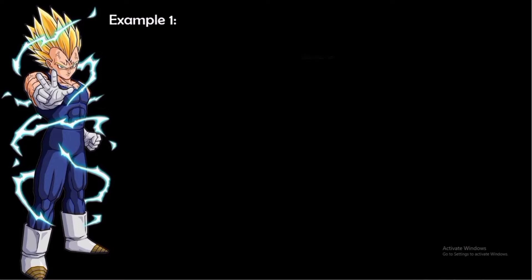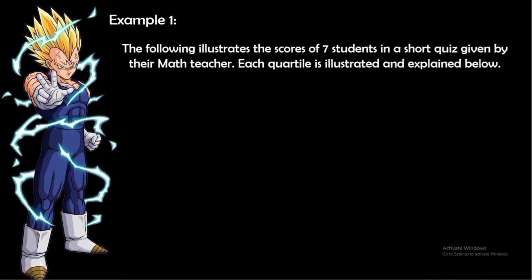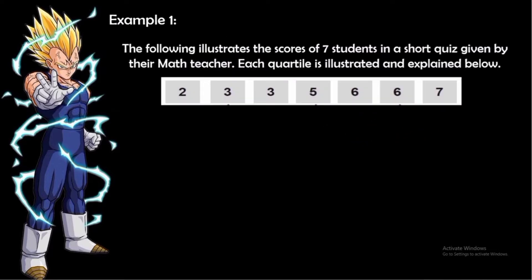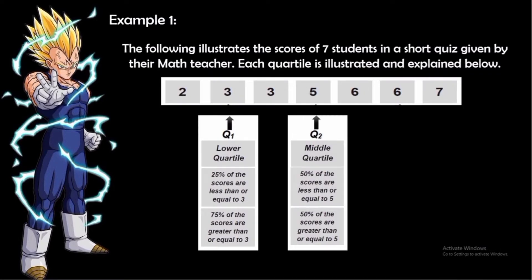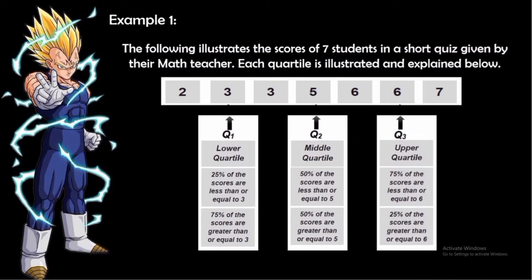Example 1: The following illustrates the scores of seven students in a short quiz: 2, 3, 3, 5, 6, 6, and 7. The first quartile is 3 — 25% of scores are less than or equal to 3, or 75% are greater than or equal to 3. The second quartile is 5 — 50% of scores are less than or equal to 5. The third quartile is 6 — 75% of scores are less than or equal to 6, or 25% are greater than or equal to 6.